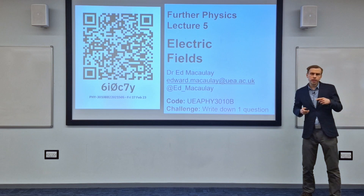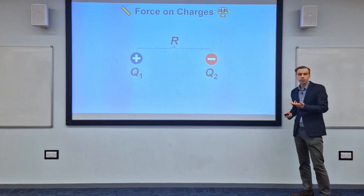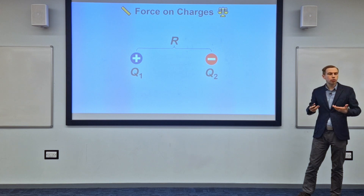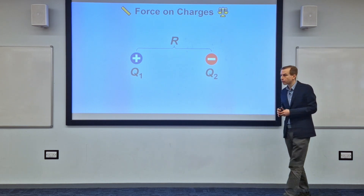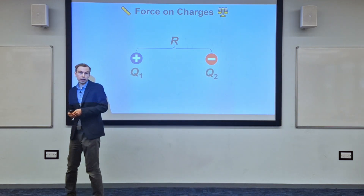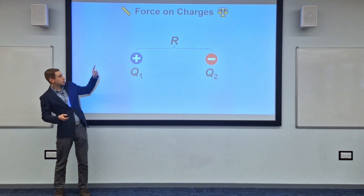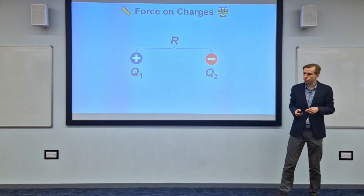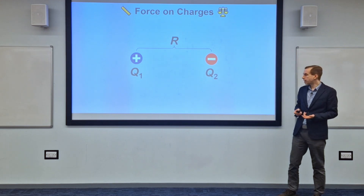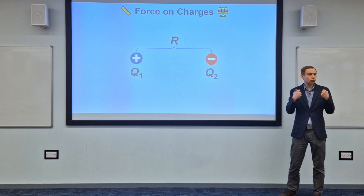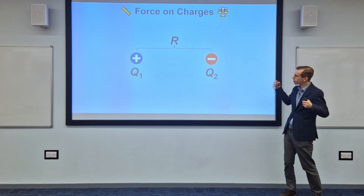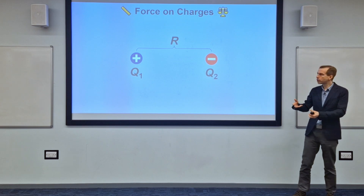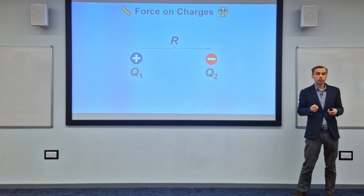The story of the electric field really starts with this situation over here. You can think of this in terms of an experimental setup — an empirical result that describes what's going on with these charges. We've got a positive charge Q1 separated by a distance R from a negative charge Q2. We can build our understanding of electric fields by thinking about the force going on between these two charges.